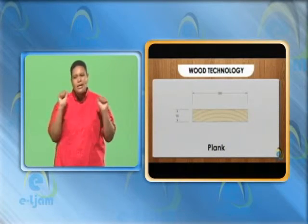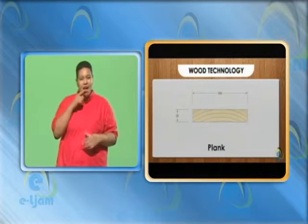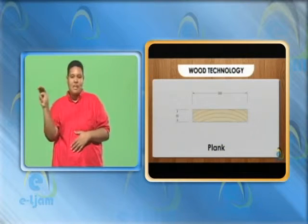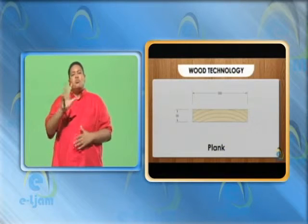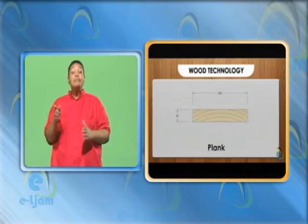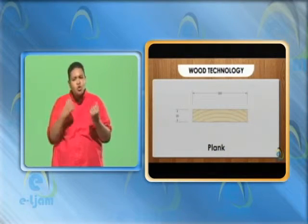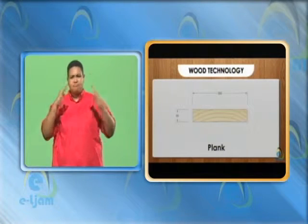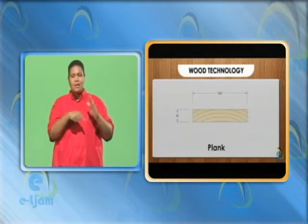7. Plank — timber having a thickness of between 50 mm to 150 mm and a width of at least 300 mm. Generally used for supporting loads and scaffolds, and also used on its edge for supporting deep joists and ceiling hangers.